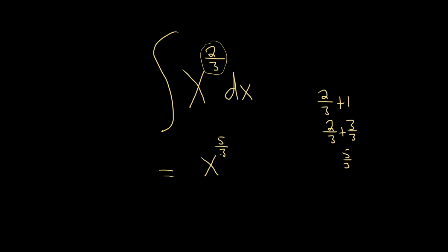It's really better to do it on the side like this. So take this number, add 1, and then you put it here. Then you also divide by that number. So it's being divided by 5 thirds.